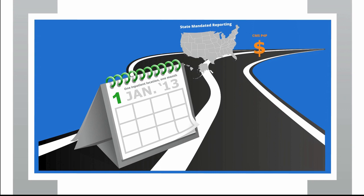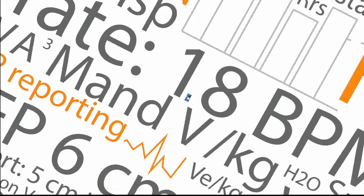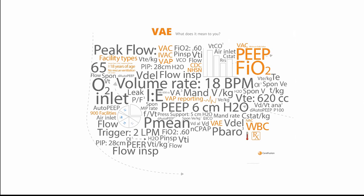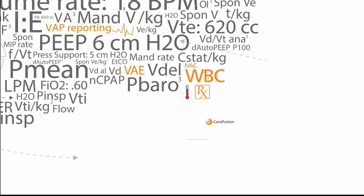So what happens next? The CDC implemented this rule on January 1, 2013. There are two ways this reporting could become mandatory: either through state mandates, or through the Centers for Medicare and Medicaid Services pay-per-performance framework. One stated goal of the VAE algorithm was to make it possible to include it in the pay-per-performance framework. Based on customer feedback, most hospitals that reported VAP voluntarily are expected to continue with voluntary VAE reporting. We hope this presentation has been useful. For more information on VAE surveillance or on how CareFusion can help automate surveillance and reporting, please click the CareFusion VAE resource page link at the end of the presentation.